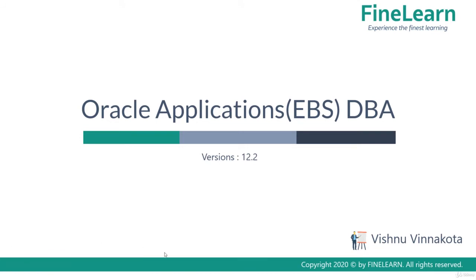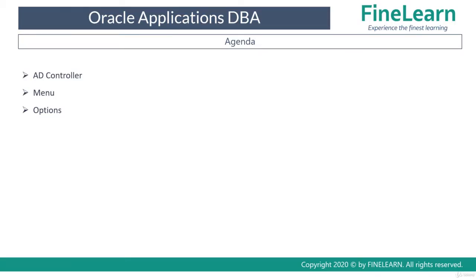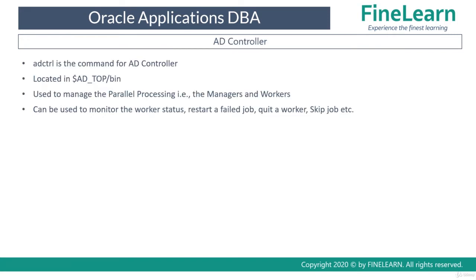In this lesson we'll be seeing the concepts of the AD utility called AD Controller. We'll cover what AD Controller is, its location, and its main purpose. AD Controller is run using a command called AD CTRL. The AD CTRL utility is mainly used to manage parallel processing in Oracle E-Business Suite and, just like any other AD executable, it is located in AD_TOP/bin.